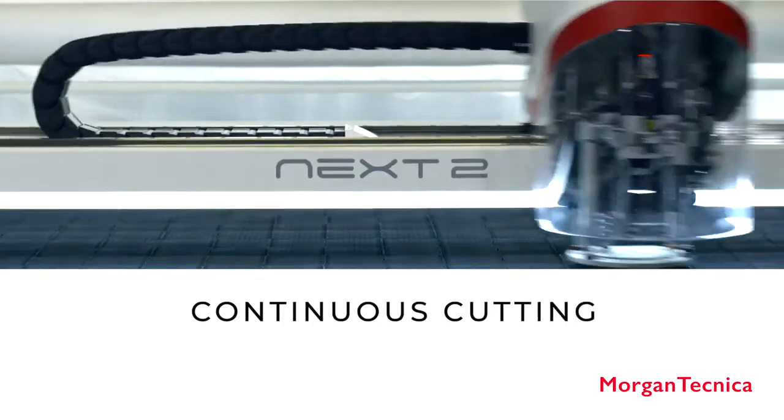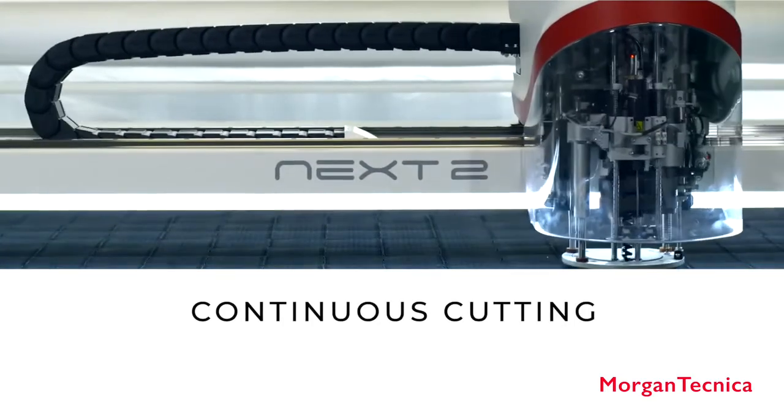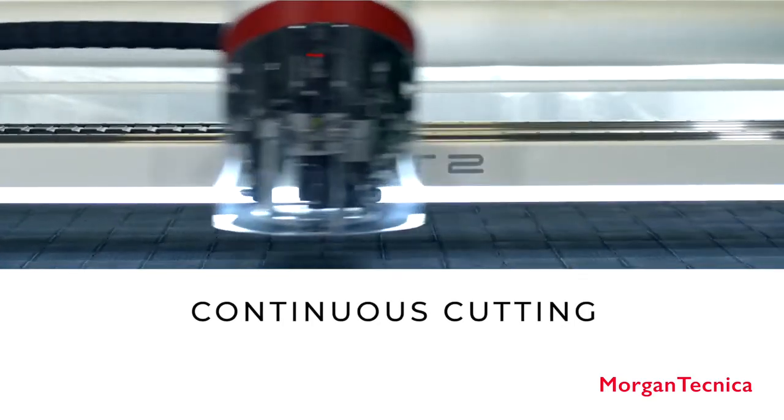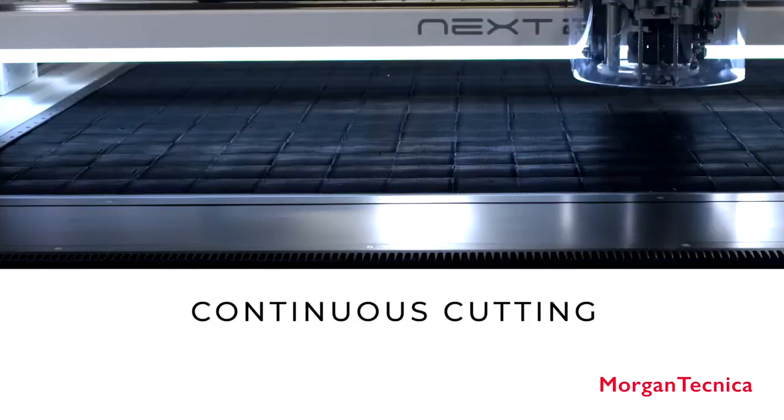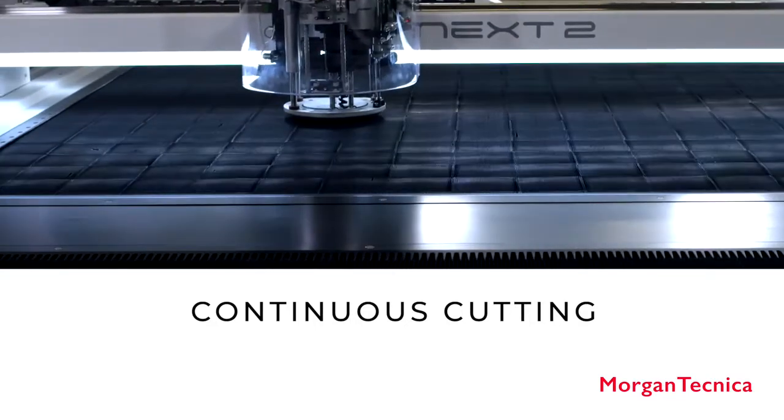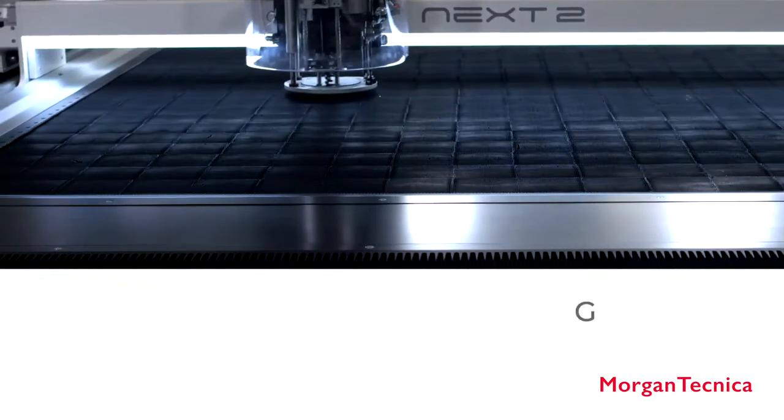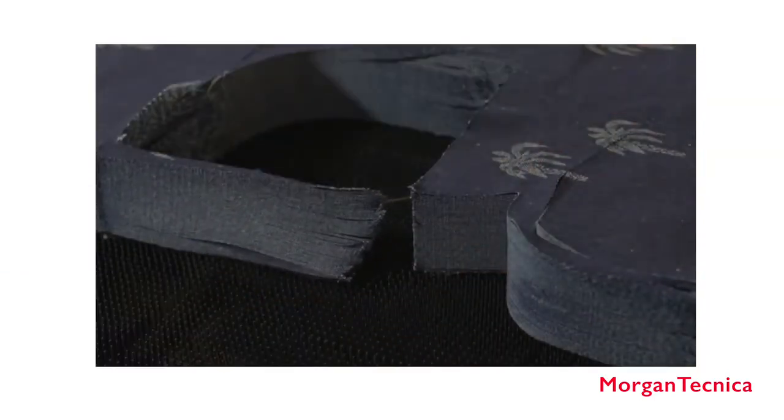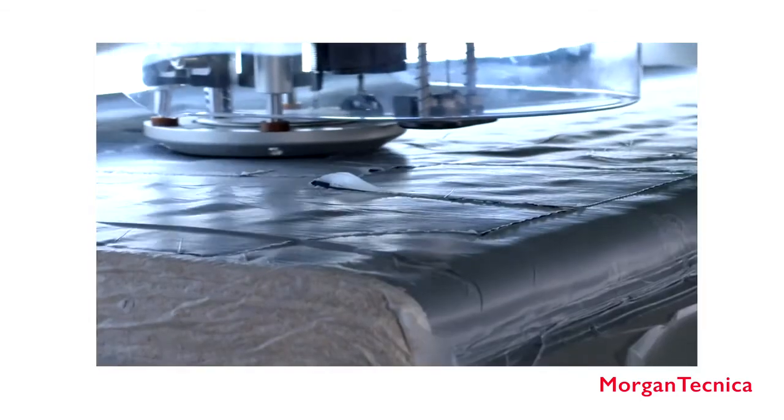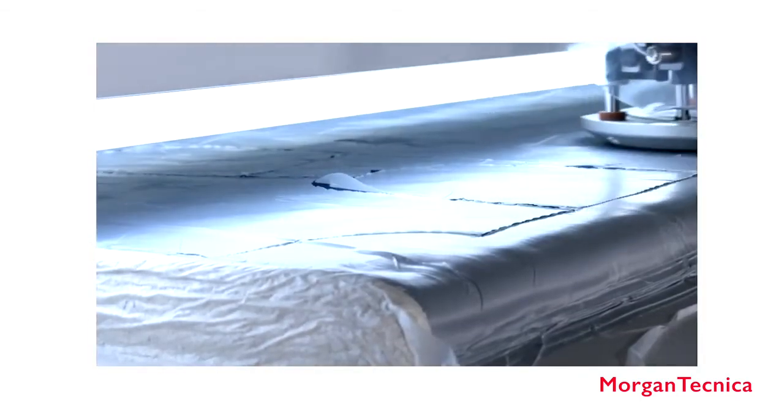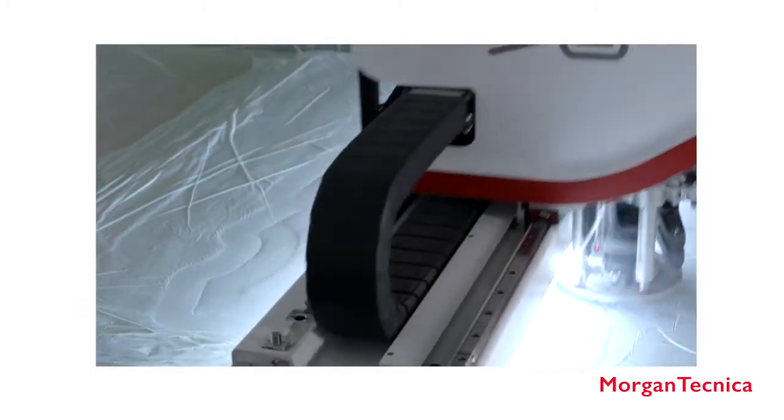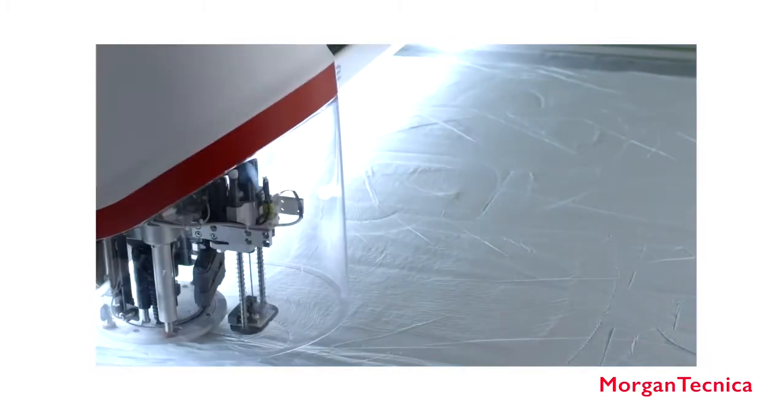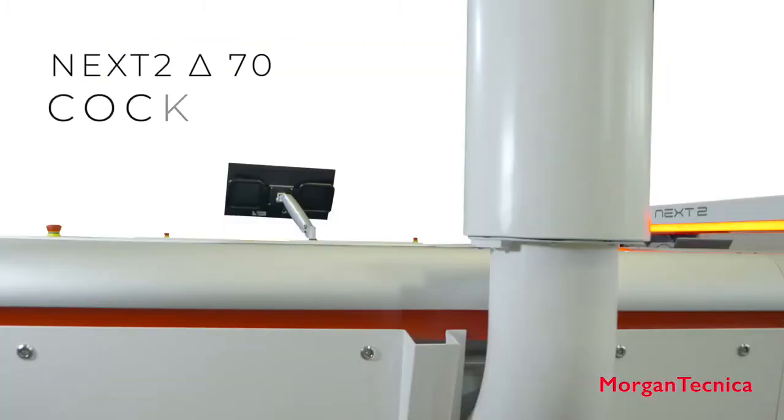Every detail has been designed to ensure maximum output quality with best performance. Next 2 Delta 70 is the first machine that consistently cuts at zero buffer with any type of lay and fabric, delivering incredible fabric savings. Continuous cut is a standard feature in this fully digital, smart machine.